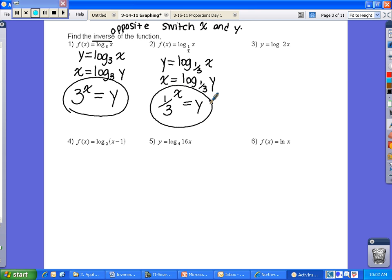For number 3, whenever we don't have a base, we know that it's to the base 10, so log base 10 of 2x. I'll use the definition, 10 to the power of y equals 2x. I haven't switched x and y yet, so let's go ahead and switch x and y. So 10 to the power of x equals 2y. Notice how I did that after I put it in exponential form.